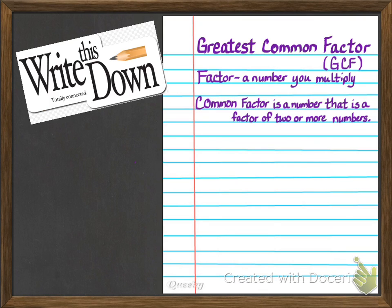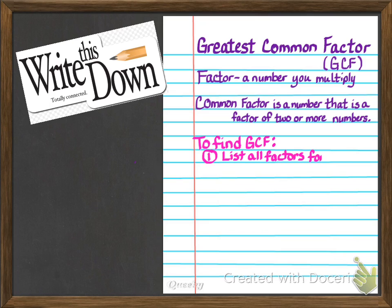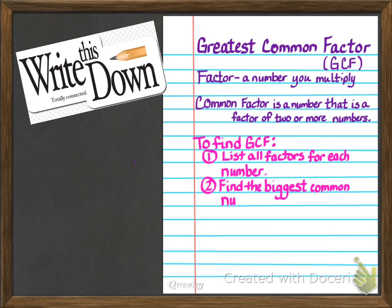Now we're going to go back to writing things down. Now that I've shown you how to find the greatest common factor, we're going to write the steps on our sheet of paper. To find GCF: Step 1, list all factors for each number. Step 2, find the biggest common number that the two sets of numbers have.